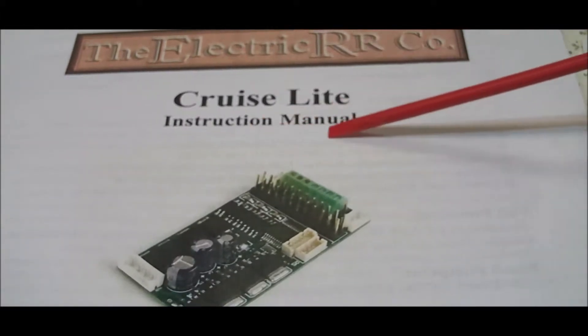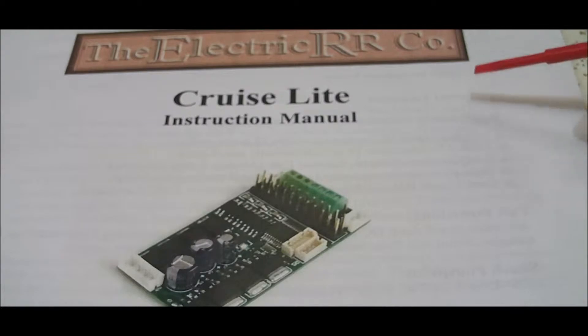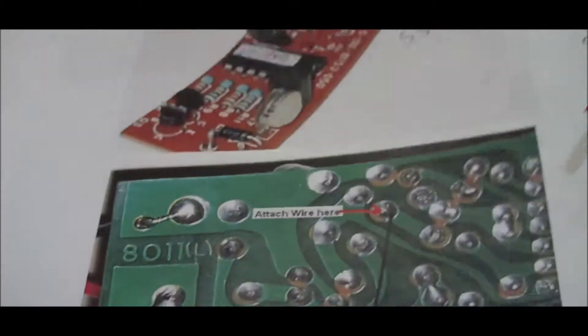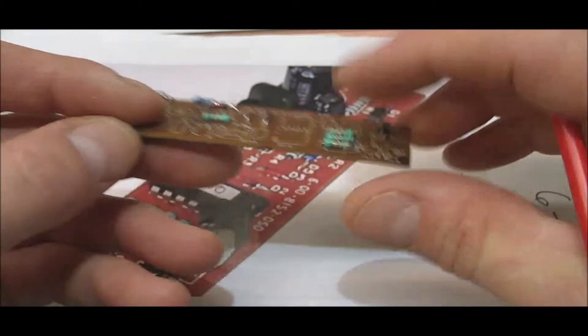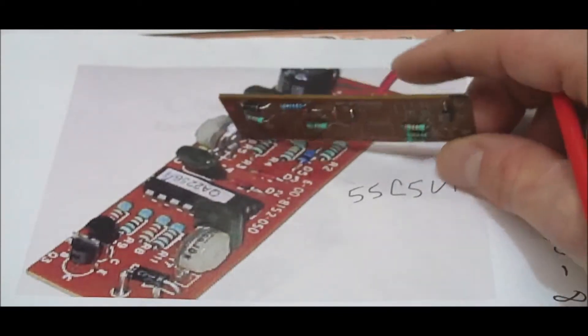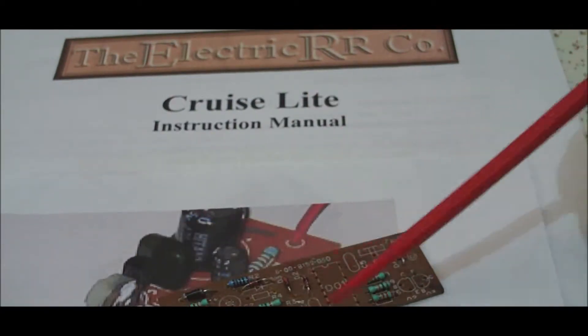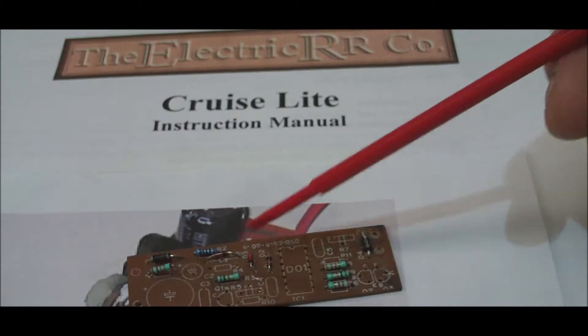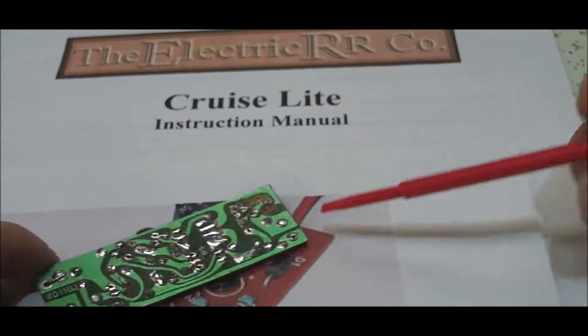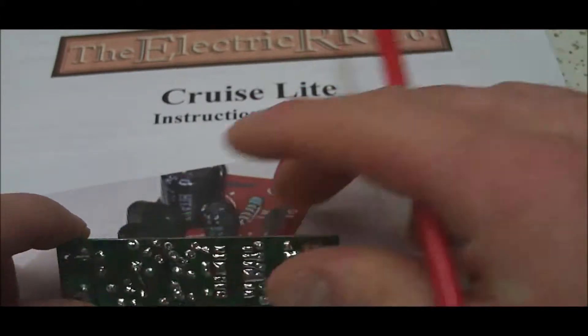Now here is actually the horn board, and trying to make the cruise light talk to this horn board I actually blew this up. So what I ended up doing was just etching another board because I started lifting traces from pulling parts on and off. So I went ahead and reverse engineered this board.